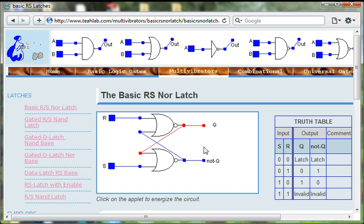Now that we have energized the circuit, let's run through the truth table, starting with the input conditions where set is 0 and reset is 1.